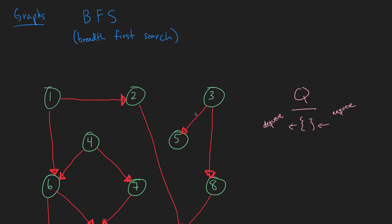Welcome to our 26th video on data structures and algorithms. Let's do an example of breadth-first search. We have our graph here — the same graph we used for depth-first search. We're going to need a queue to do this. We'll dequeue from the left side and enqueue from the right side, as you'll see as we go along.